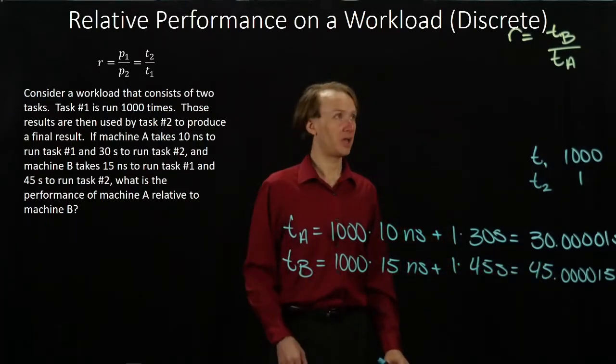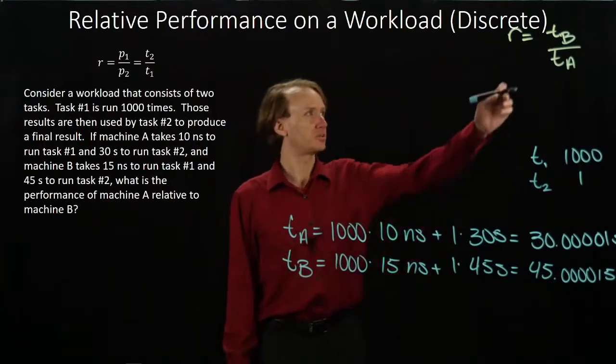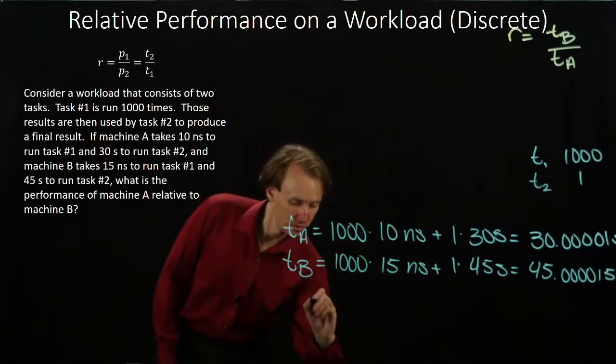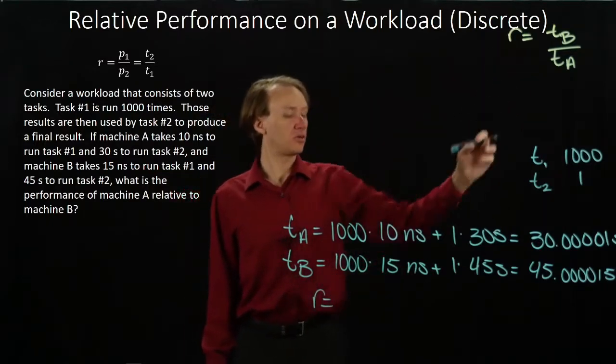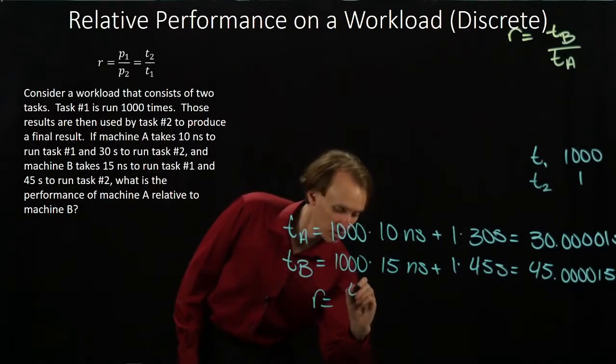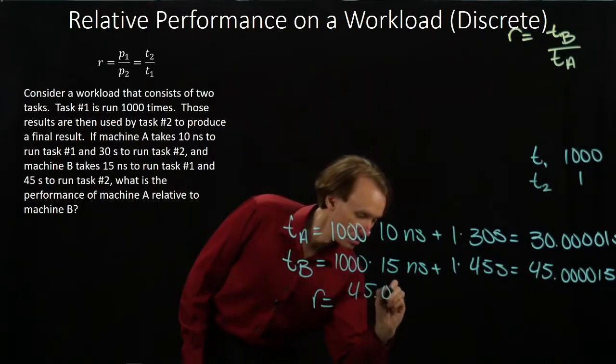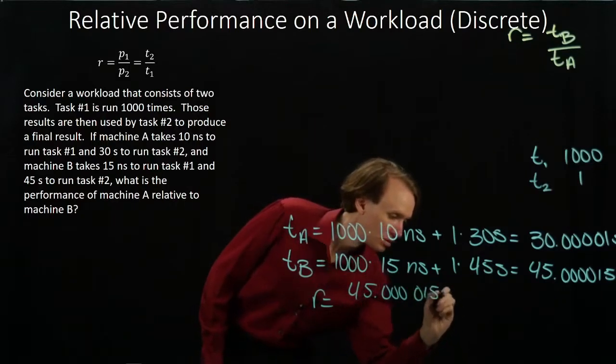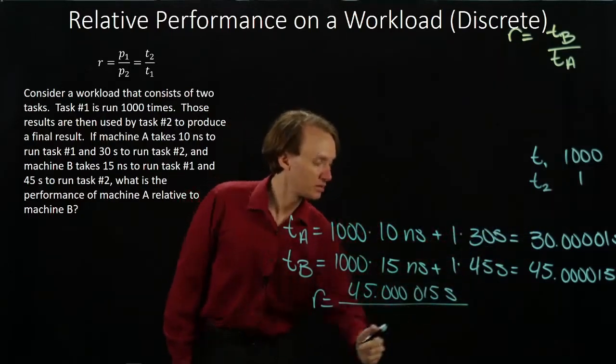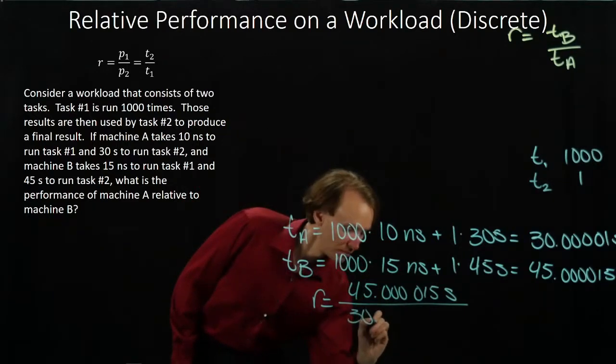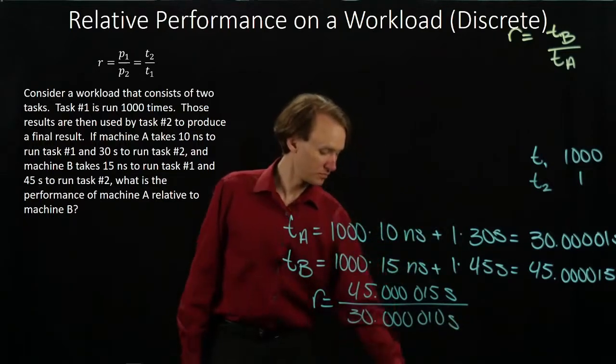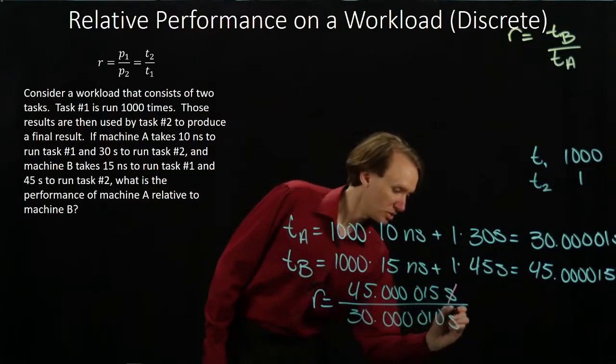Now I've got these two times, time A and time B, and I just want to plug them into my original relative performance equation. So I have time B over time A. Time B is... And time A... Obviously my seconds will cancel here.